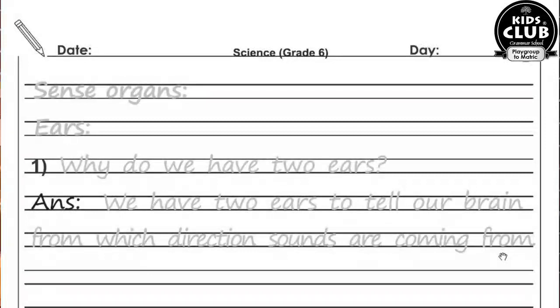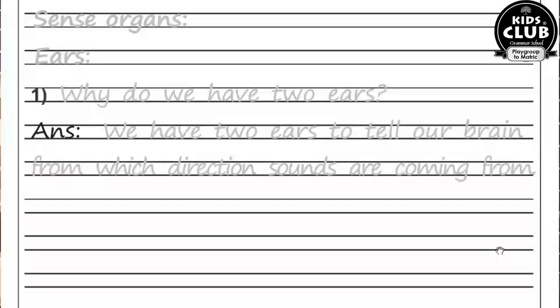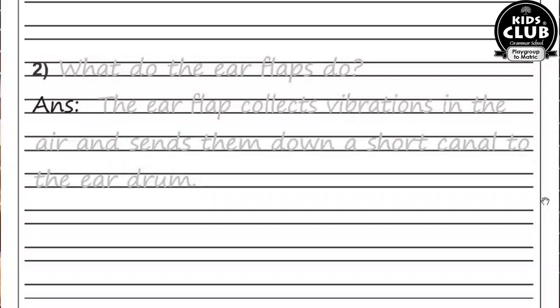Draw the diagram of the eye from the science book. Sense Organs — Ears. Question number one: Why do we have two ears? We have two ears to tell our brain from which direction sounds are coming. Do kaan hamare is liye hote hain taa ki humain pata lage kaun sa direction se awaaz aa rahi hai.